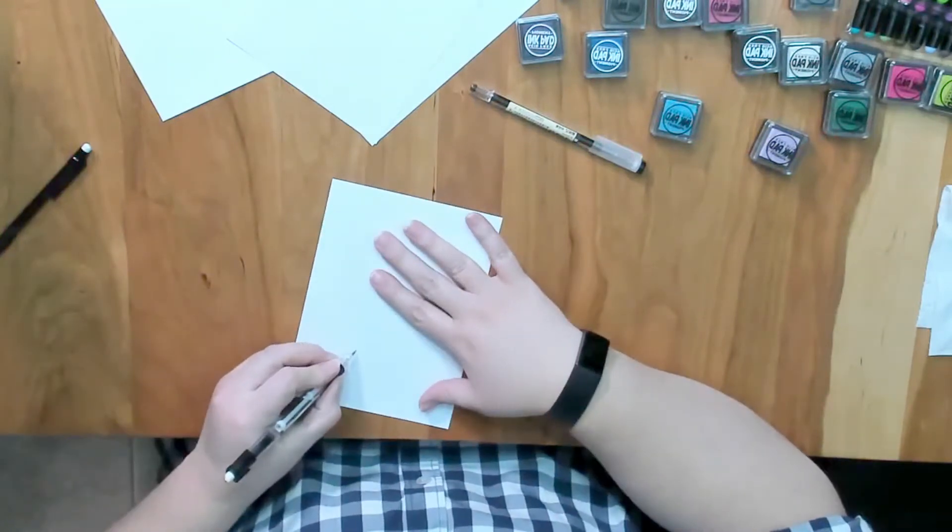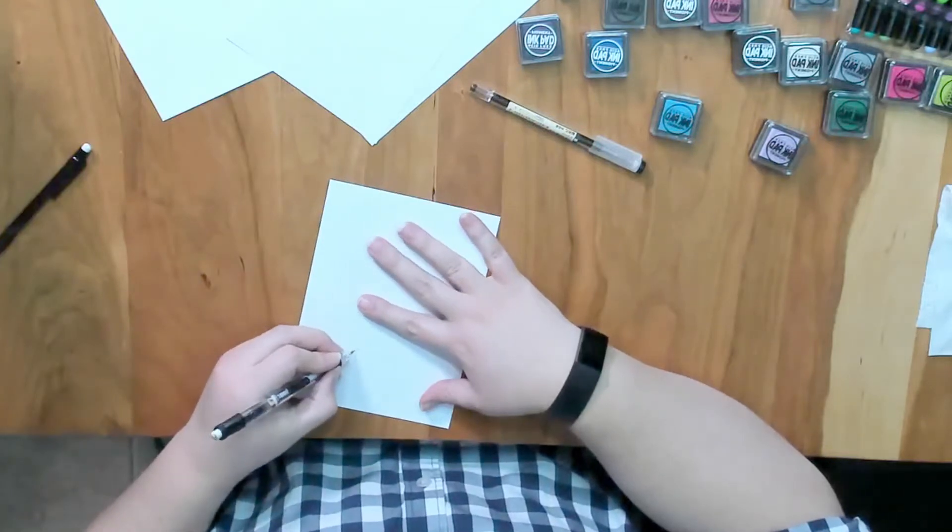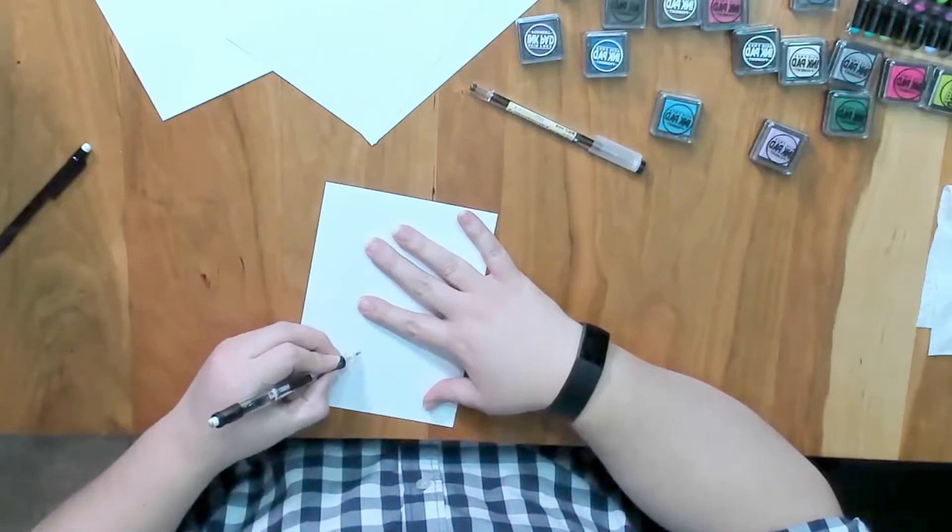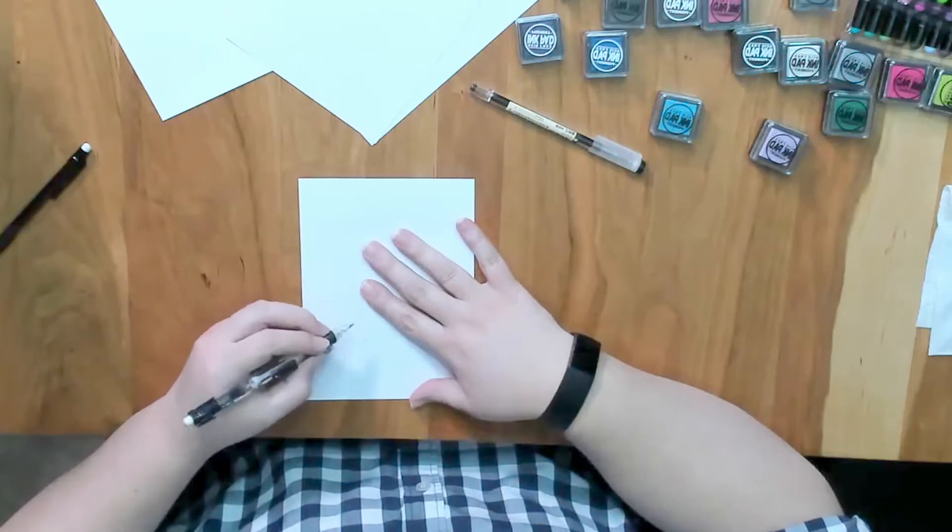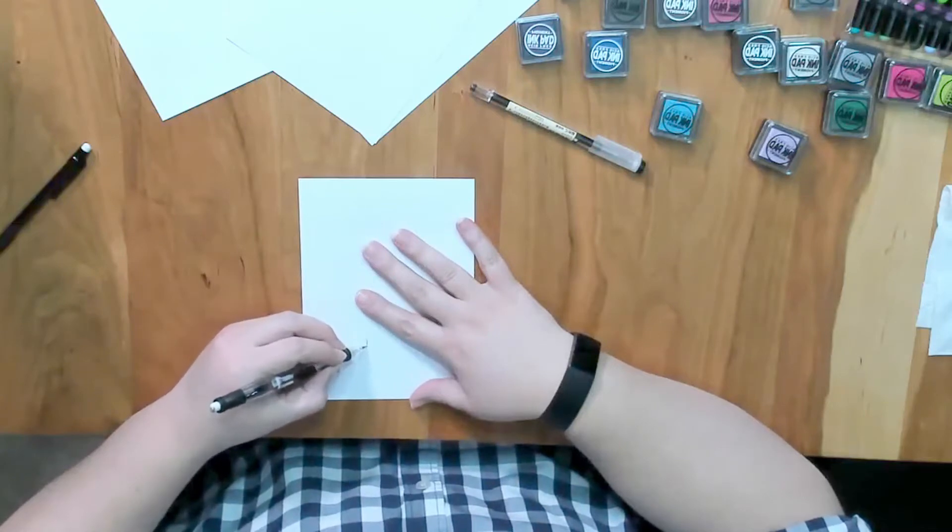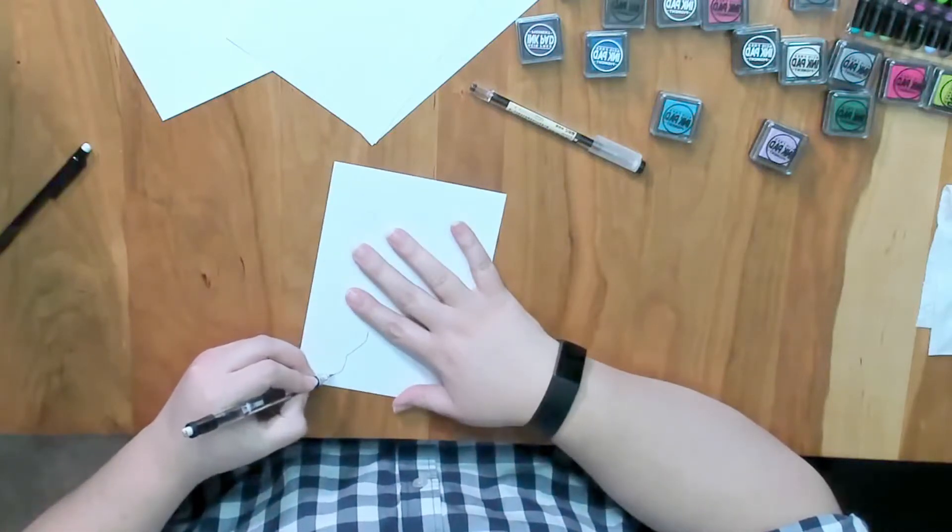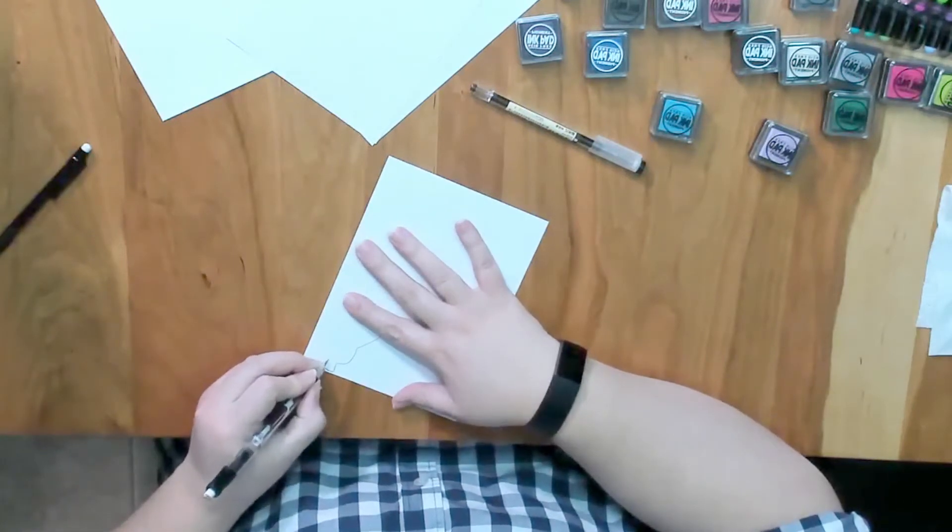First thing, as always, we want to sketch out an elephant. The neat part about this, you can do any type of elephant you want. It depends on you, what you like, if you want to do a mama or baby. I'm just going to kind of sketch this out, and once again, it doesn't have to be perfect.